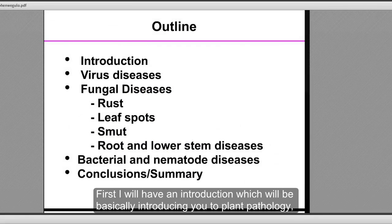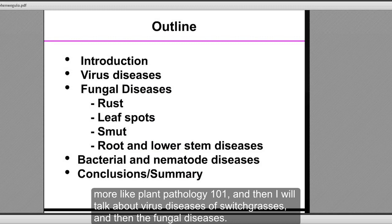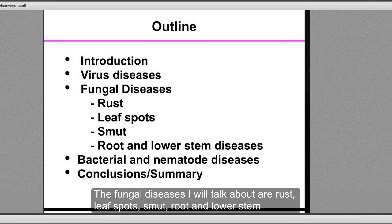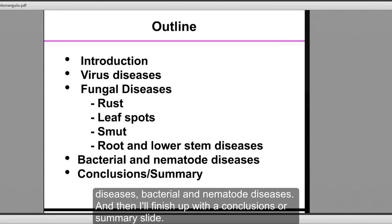First, I will have an introduction, which will be basically Plant Pathology 101. And then I will talk about virus diseases of switchgrass, and then the fungal diseases. Under fungal diseases, I will talk about rust, the leaf spots, smut, root and lower stem diseases, bacterial and nematode diseases. And then I will finish up with the conclusions or summary slide.